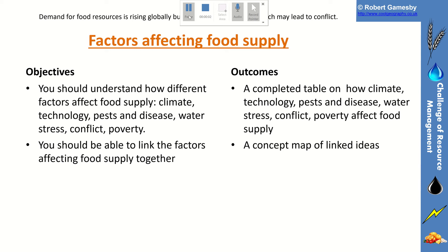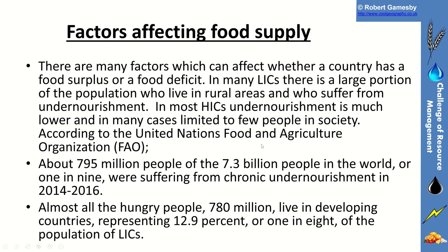Hello and welcome to this GCSE explainer on factors affecting food supply. We've already ascertained that across the globe there are many factors that can decide whether a country has food surplus or a food deficit. We saw on some of the maps that in many very low income countries there's a large portion of the population who live in rural areas and who suffer from undernourishment.